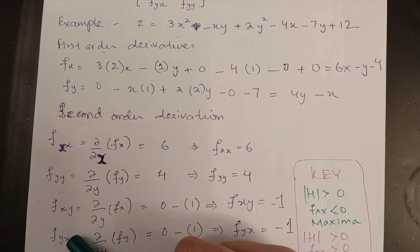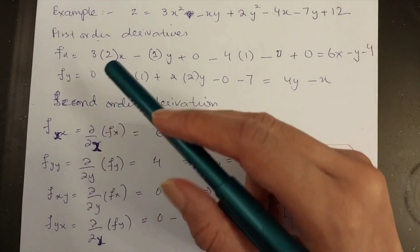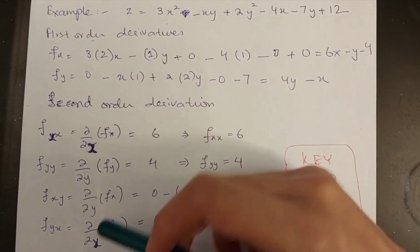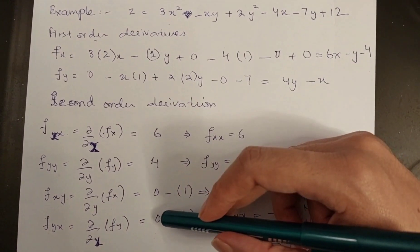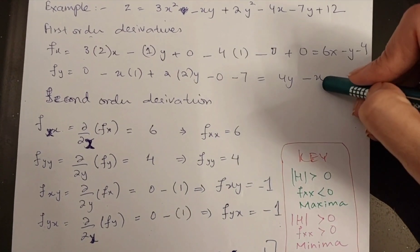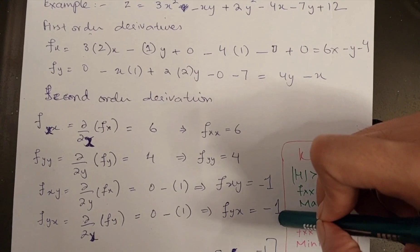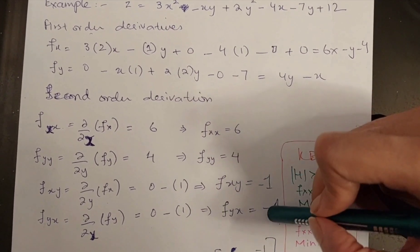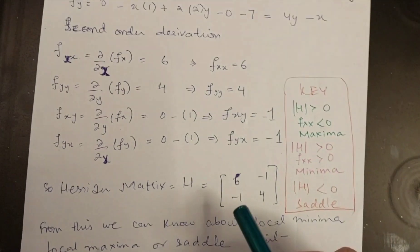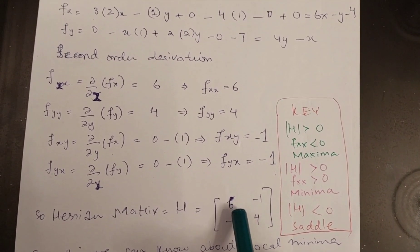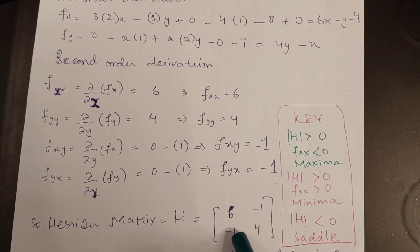For fyx, I take the partial derivative of fy with respect to x. Applying the derivative with respect to x on the term 4y gives 0, and on the term x gives 1. So fyx also equals minus 1. Both of these mixed partial derivatives have the same value, which is expected. Now placing all these values into the Hessian matrix: fxx = 6 in the top-left, fyy = 4 in the bottom-right, and minus 1 and minus 1 for the off-diagonal terms.